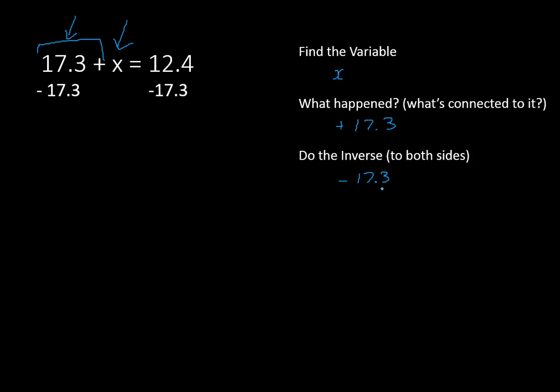17.3 minus 17.3 on the left side will leave us with x by itself, which is what we want. And on the right side of the equation, we have 12.4 minus 17.3. That will leave us with a negative 4.9.